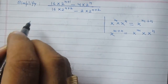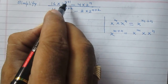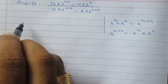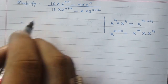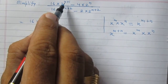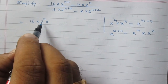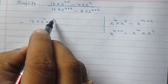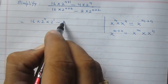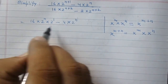Using this result, we can write 2 raised to the power n plus 1 as 2 raised to the power n multiplied by 2 raised to power 1. So the numerator is 16 multiplied by 2 raised to power n into 2 raised to power 1, minus 4 multiplied by 2 raised to the power n as it is.